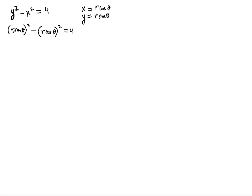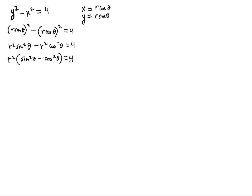The left side simplifies as r squared sine squared theta minus r squared cosine squared theta is equal to 4. We can factor out r squared, leaving r squared times the quantity sine squared theta minus cosine squared theta equals 4.